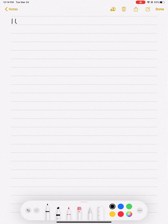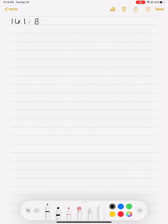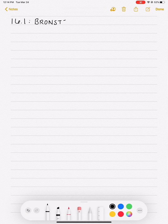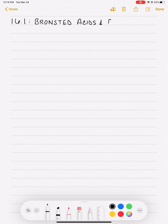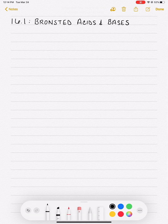We are starting with section 16.1, which is on Bronsted acids and bases. This is something we did cover in 161, but we didn't use it at all in 162, so there's a good chance you forgot about Bronsted acids and bases.